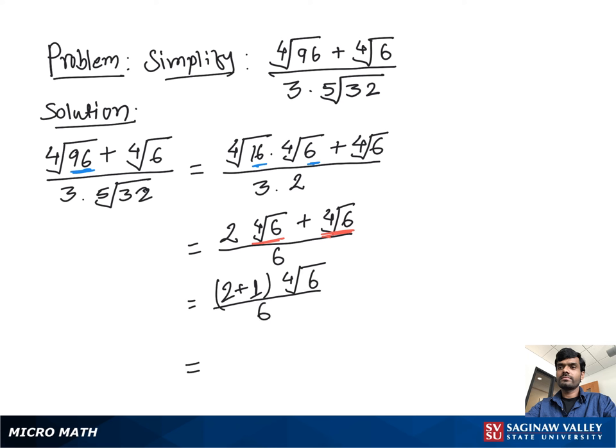If we divide 3 by 6, we get 1 over 2. So our final answer is 4th root of 6 over 2.